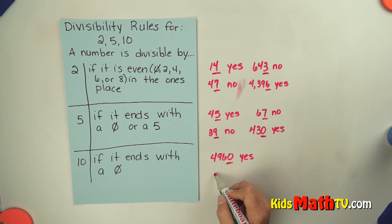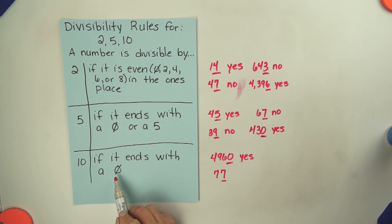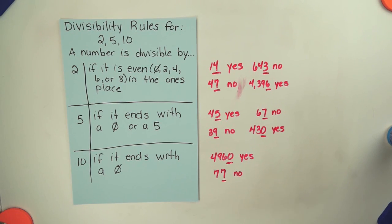How about another number? 77. Does 77 end with a 0? No, it does not, so 77 will not divide evenly by 10.